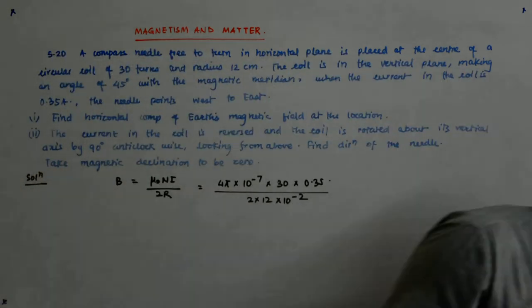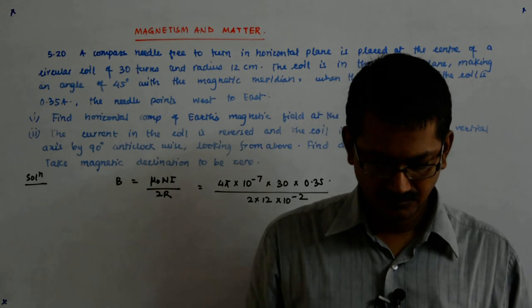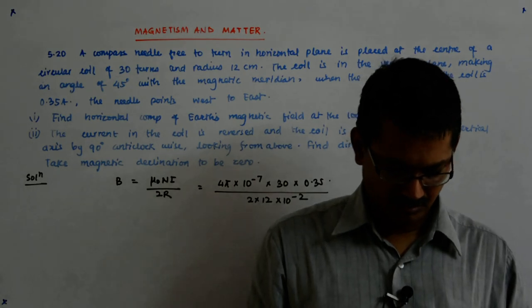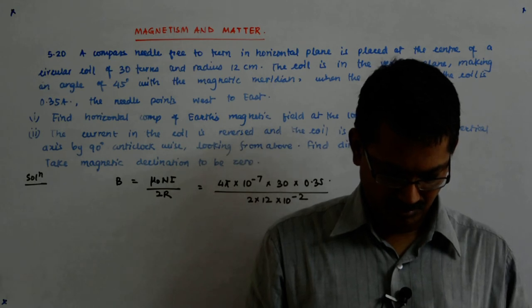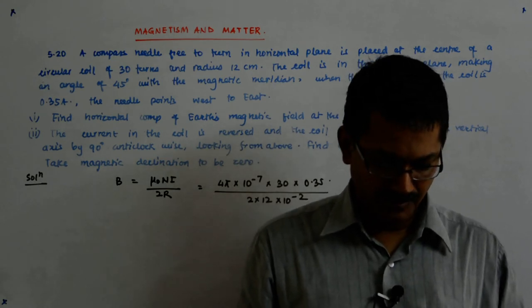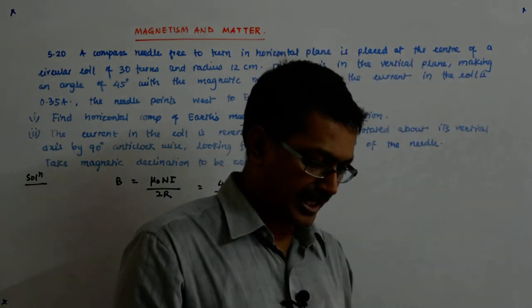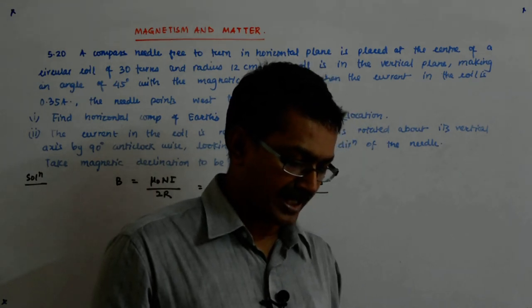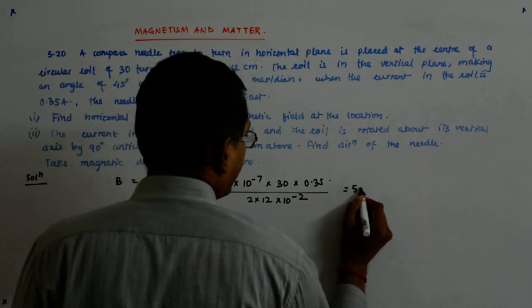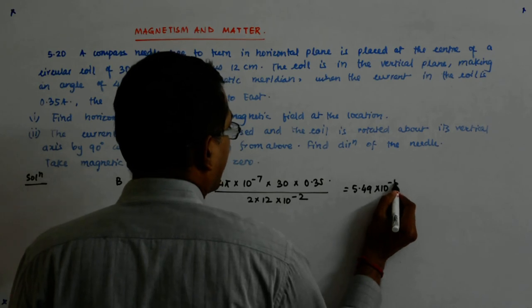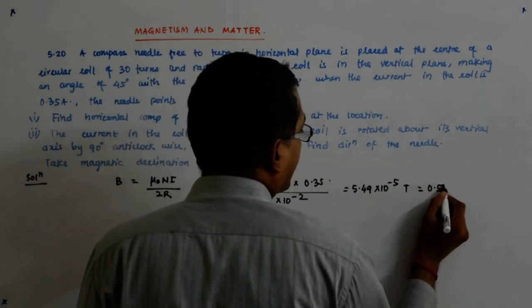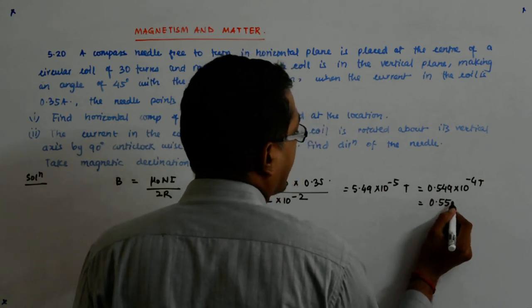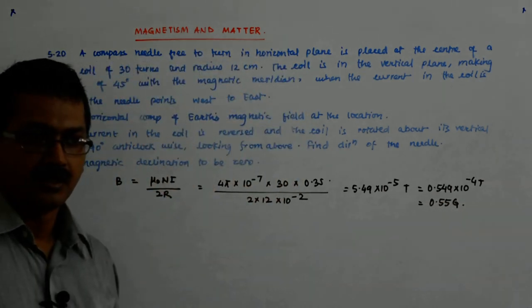So B is that much, so that is equal to 5.49 into 10 to the power minus 5. So that gives me 0.549 into 10 to the power minus 4. So this is equal to 0.549 into 10 to the power minus 4 Tesla. That is equal to 0.55 Gauss. Now 0.55.